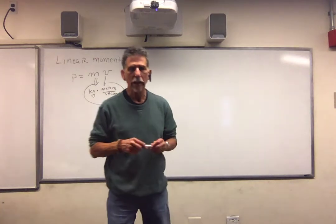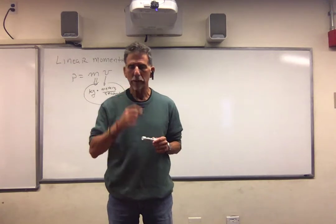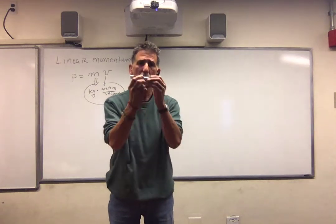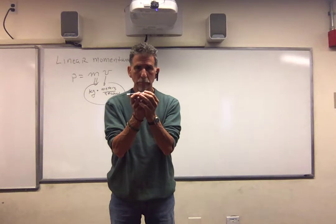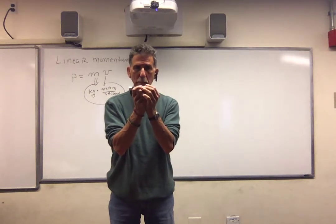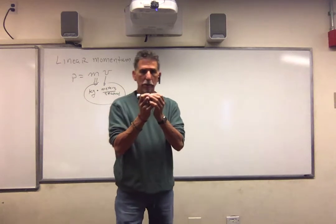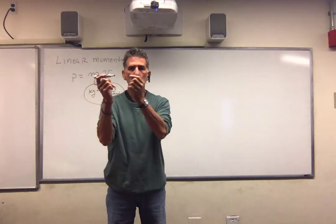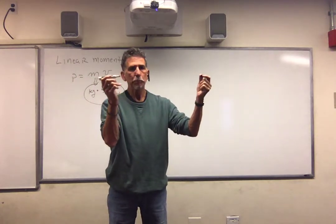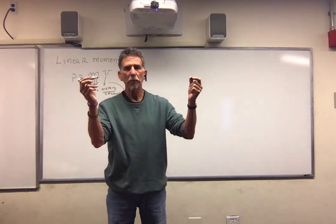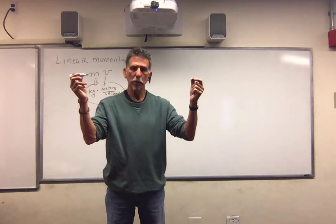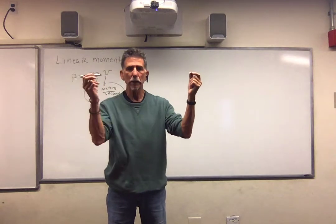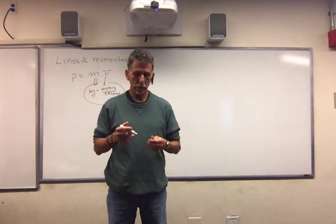The last thing we discussed in lecture 10 was conservation of linear momentum. We used the example of a bullet being fired from a rifle. If the system has zero initial momentum, then whatever happens, the total momentum must also be zero. If we fire a bullet, the bullet goes off this way, the rifle recoils this way. The bullet's momentum, say positive x, means the rifle has negative x — negative 50 kilogram meters per second — so the total is still zero.